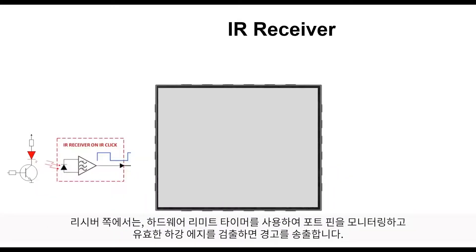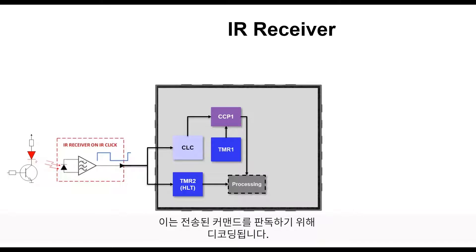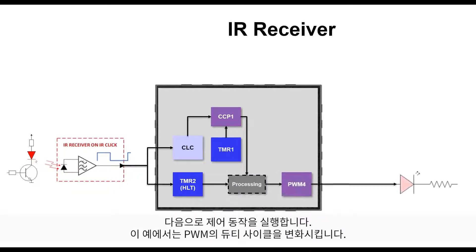For the receiver, we use a hardware limit timer peripheral to monitor the port pin that will alert us when a valid falling edge is detected. A capture compare or CCP peripheral combined with another timer are configured to detect start and end sequences as well as logic one and zero, which are then decoded to determine the sent command. This is followed by a corresponding control action, which in our case is simply varying a PWM duty cycle.